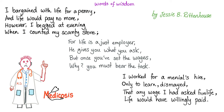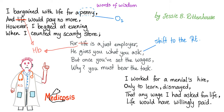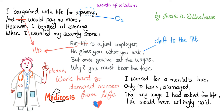Some poetry: 'I bargained with life for a penny and life would pay no more. However, I begged that evening when I counted my scanty store. For life is a just employer — he gives you what you ask. But once you have set the wages, you must bear the task. I worked for a menial's hire only to learn, dismayed, that any wage I had asked from life, life would have willingly paid.' Applied to medicine: the hemoglobin is a just employer — shift it to the right and it will give you all the oxygen you need.